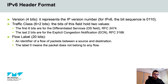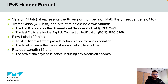The special flow label 0 means the packet does not belong to any flow. The payload length field consists of 16 bits and it indicates the size of the payload in octets.